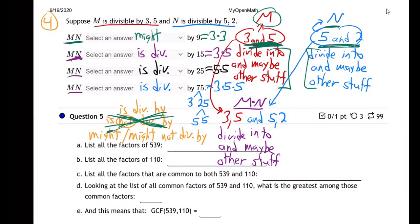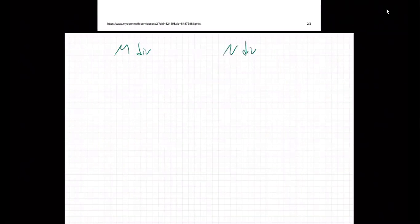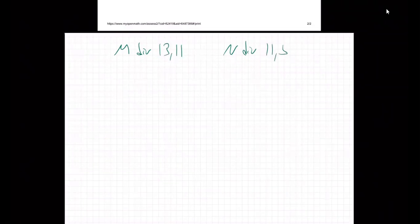So our answers are going to be: yeah, they definitely have that — or I don't know, they might. They don't have it right now in what I can see, but they might. So let me work through the student's version. For M, divisible by 13 and 11, and for N, divisible by 11 and 5.